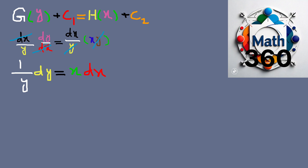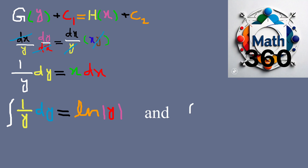Next we integrate both sides with respect to their respective variables. The integral of 1 over y with respect to y is the natural log of the absolute value of y. On the right side, the integral of x with respect to x is x squared divided by 2.